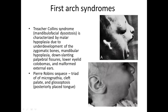The first arch syndromes include two important conditions. Treacher Collins syndrome is characterized by malar hypoplasia, underdevelopment of the zygomatic bones, and mandibular hypoplasia, since the maxillary and mandibular prominences are derived from the first arch. There are also down-slanting palpebral fissures, lower eyelid colobomas, and malformed ears, as the auricular hillocks appear around the first pharyngeal groove. The second is Pierre Robin sequence, which is a triad of micrognathia, cleft palate, and glossoptosis — a posteriorly placed tongue.